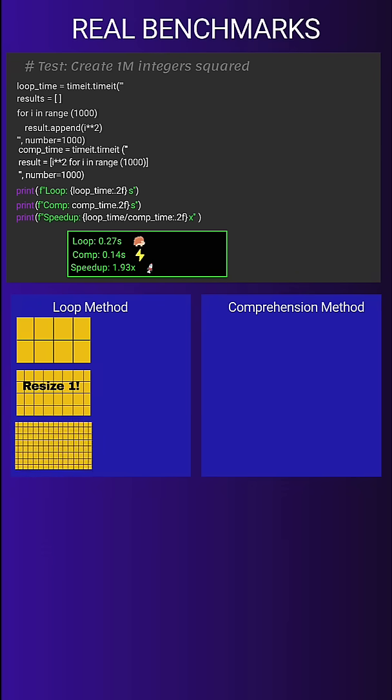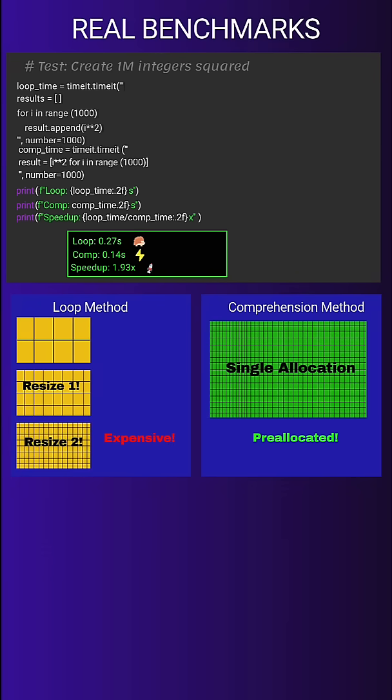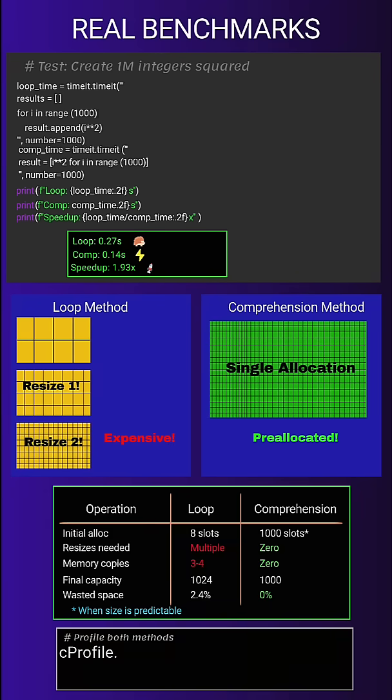The secret? Comprehensions pre-allocate the list size when possible, avoiding multiple resize operations.